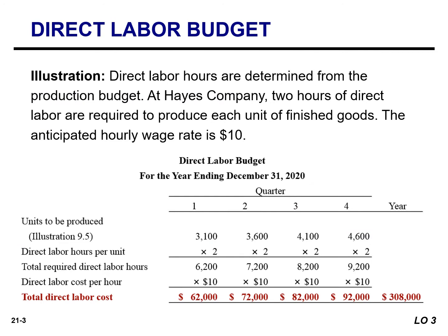Direct labor hours are determined from the production budget. At Hayes Company, two hours of direct labor are required to produce each unit of finished goods, and the anticipated hourly wage rate is $10. So in Q1, if we anticipate producing 3,100 units and each unit requires two hours, our total required direct labor hours are 6,200. We multiply that by the direct labor cost per hour of $10 to get a direct labor cost of $62,000. You would do a very similar exercise for the other quarters.